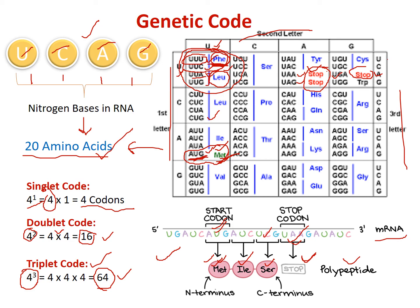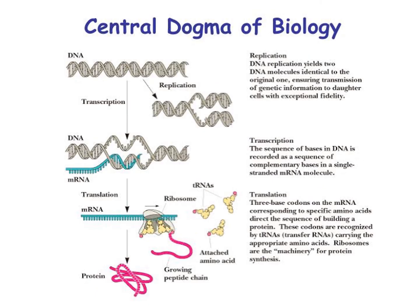Now we've seen the concept of genetic code and how many nucleotides code for one amino acid. The process of making a protein using genetic information present in DNA takes place in two steps: the first is transcription, and the second is translation.